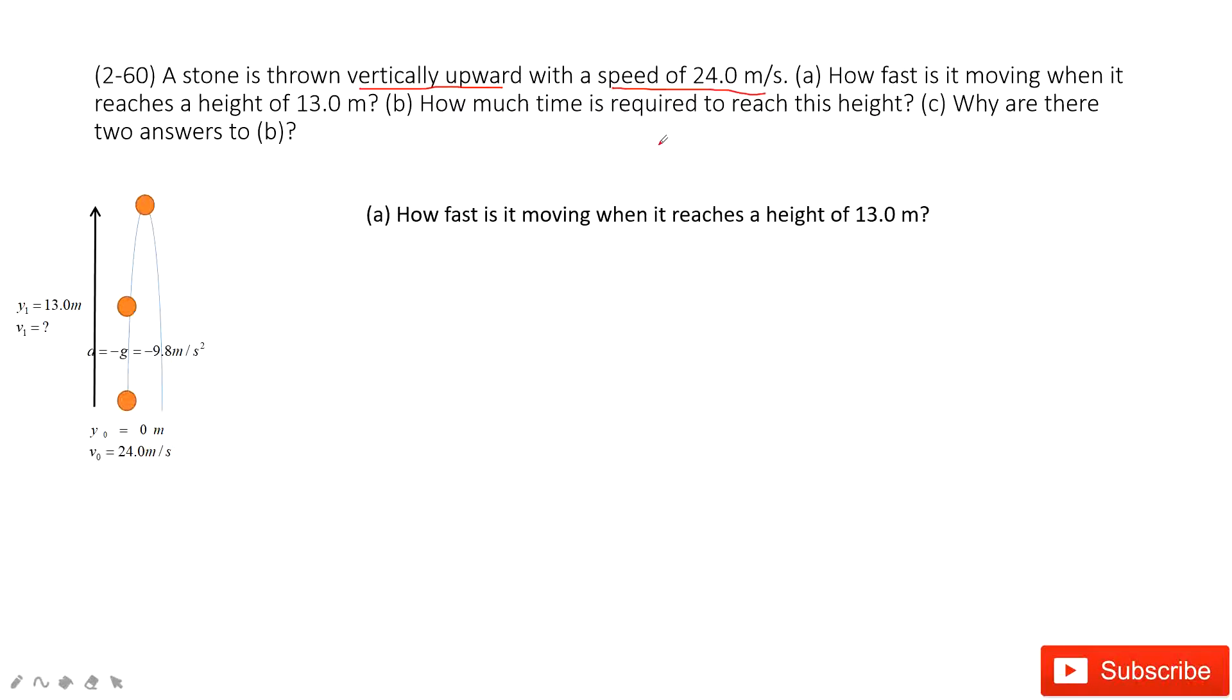How fast is it moving when it reaches the height of 13 meters? It tells us the position y1 is 13 meters. We need to find V1. In this part, we know the initial velocity, initial position, and the final position. We also know the acceleration - the acceleration due to gravity pointing down, negative 9.8 meters per second squared. We must keep the negative sign.